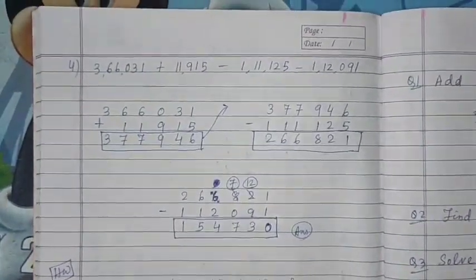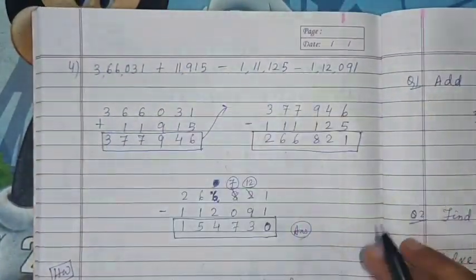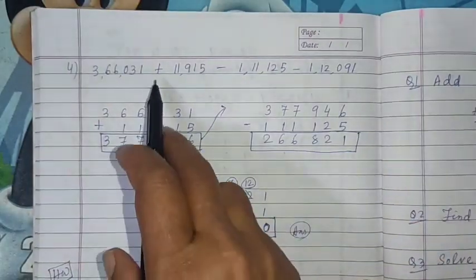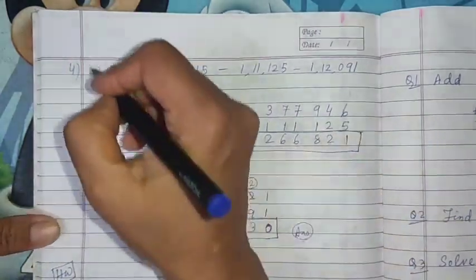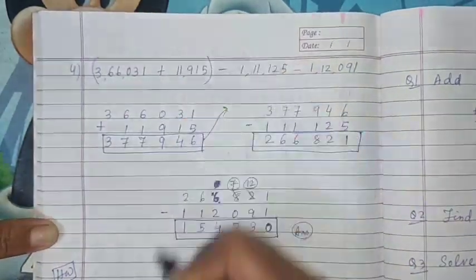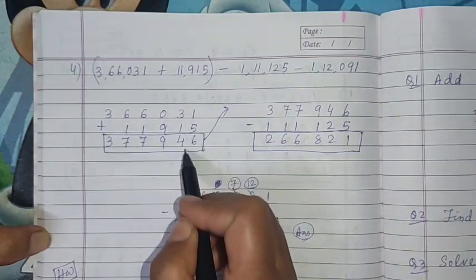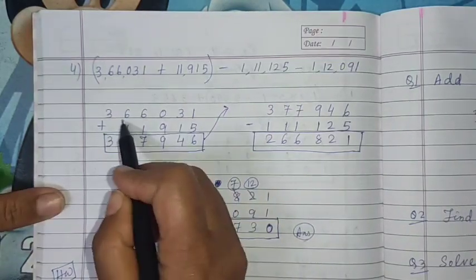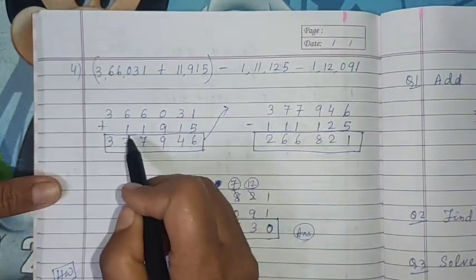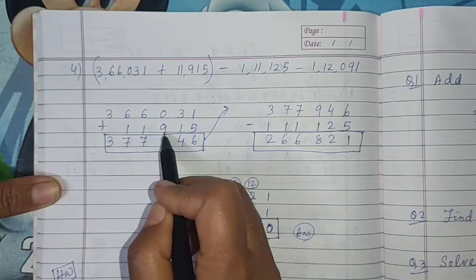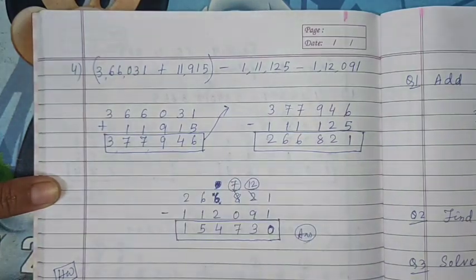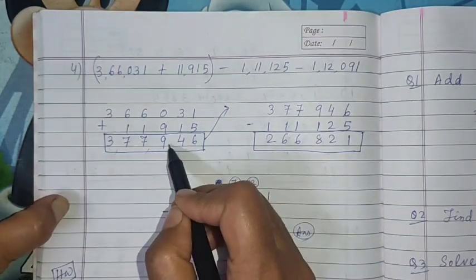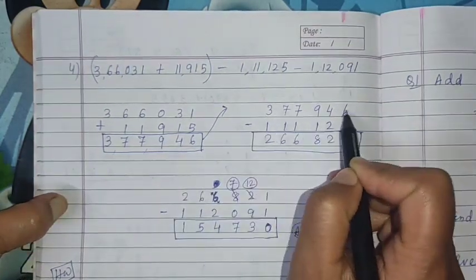Same way the next - here we have four numbers. Plus minus minus - one addition and two subtraction. First you take first two numbers, addition is there, so arrange the number and do addition. 3,66,031 plus 1,11,915 is equal to 3,77,946. Now this sum you take and write separately here.